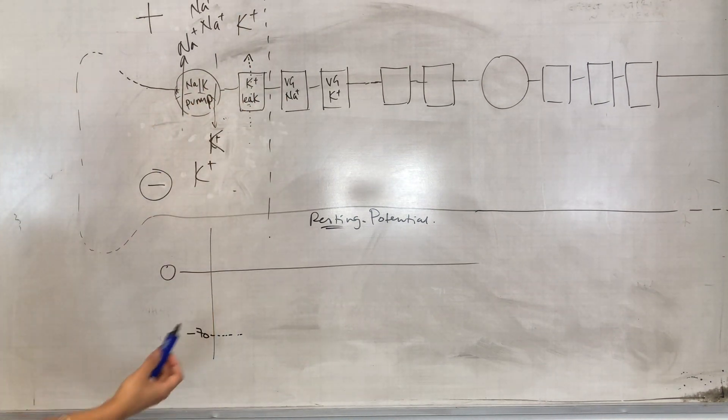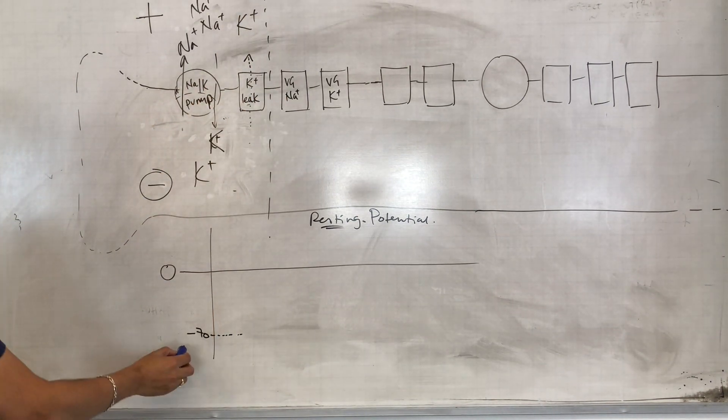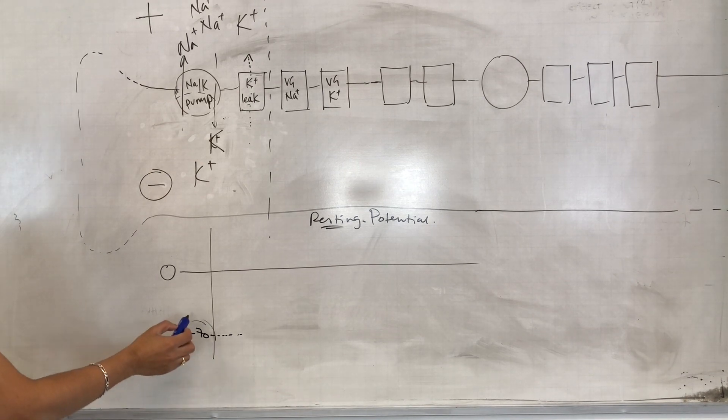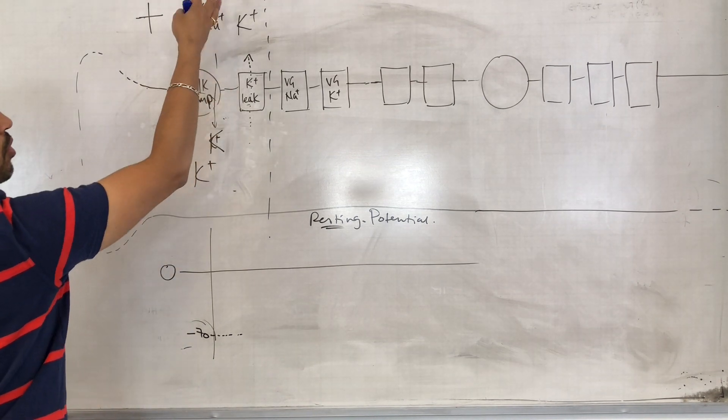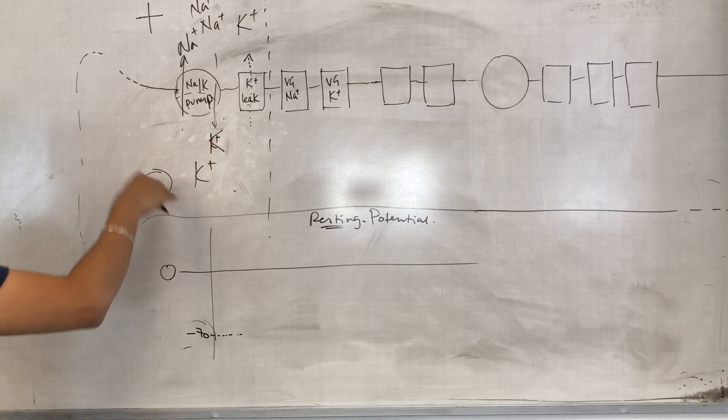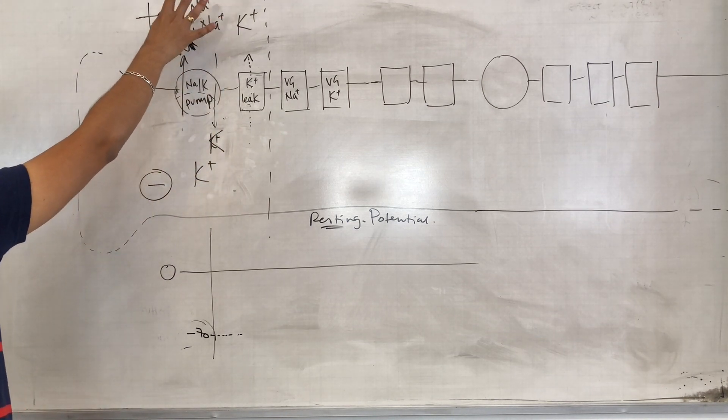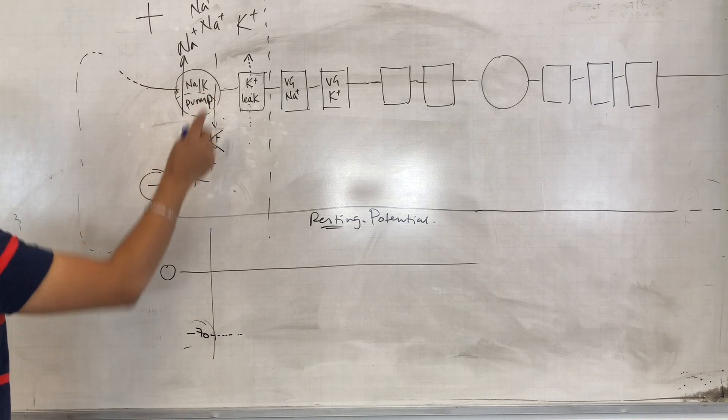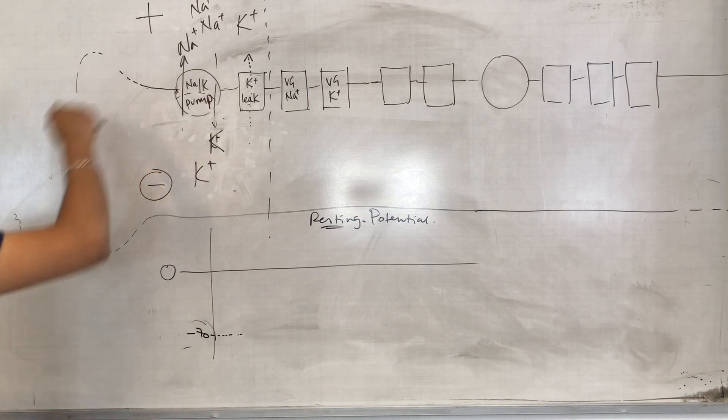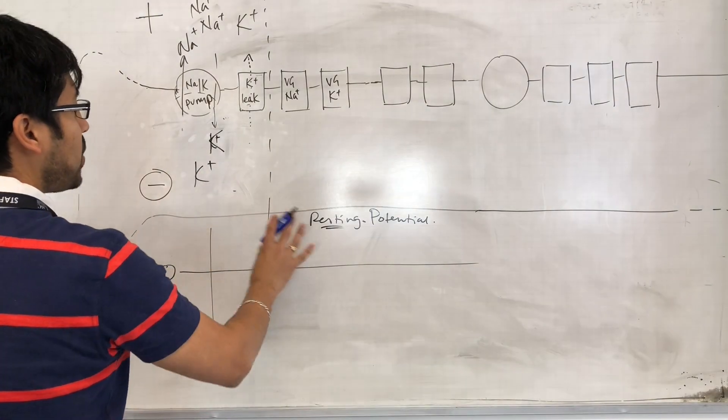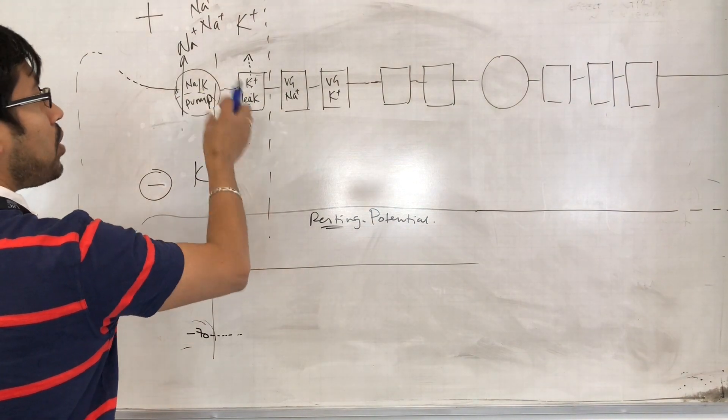At this point then, this is the situation at rest. This is why that resting potential is minus 70. There's a few more positive ions out here than there are in here, causing the outside to be more positive than the inside, therefore the inside to be minus 70 compared to the outside. So that's the situation at rest. Now what happens during the action potential?